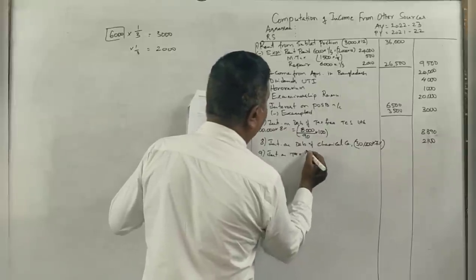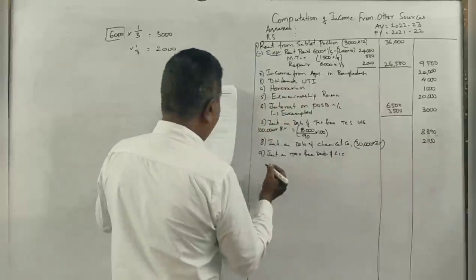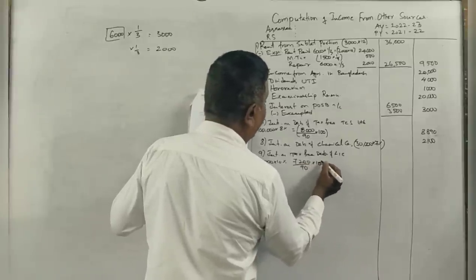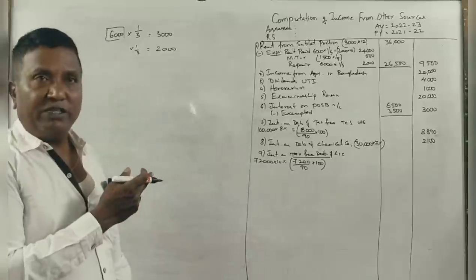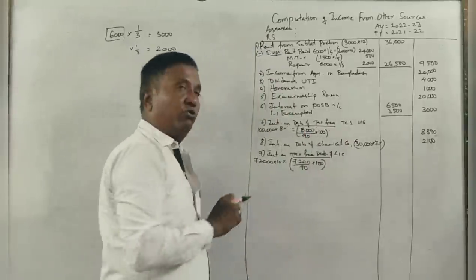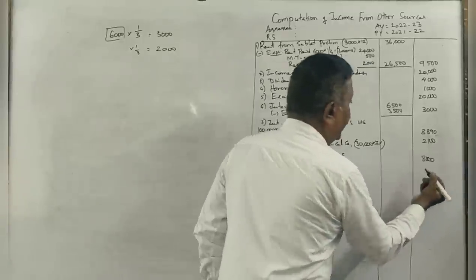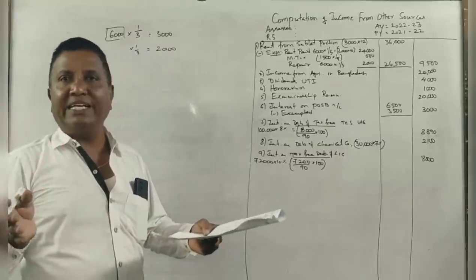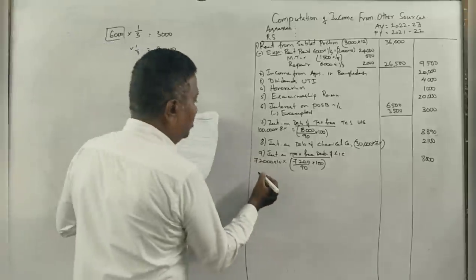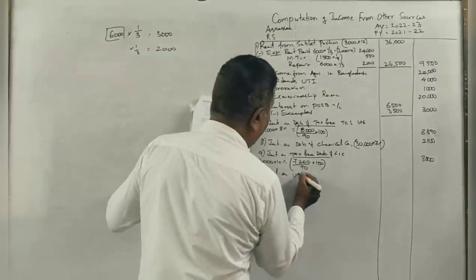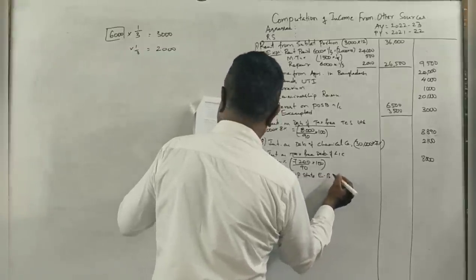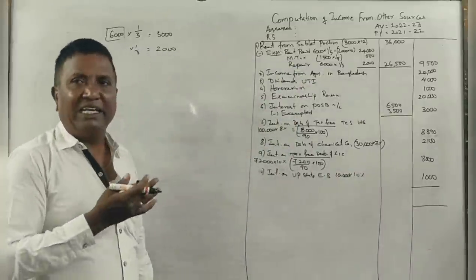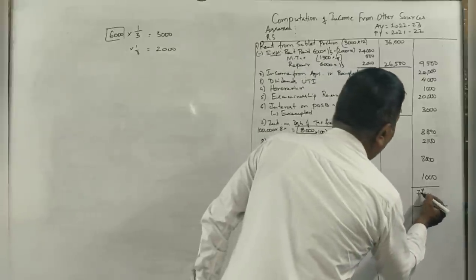72,000 rupees, 10% tax-free debentures of LIC of India: 72,000 into 10% is 7,200. Since it's tax-free, gross up: 7,200 divided by 90 into 100 equals 8,000. Next, 10,000 rupees, 10% UP State Electricity Board bonds (government): interest is 10,000 into 10%, which is 1,000.